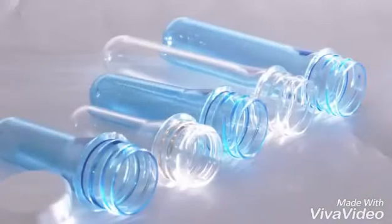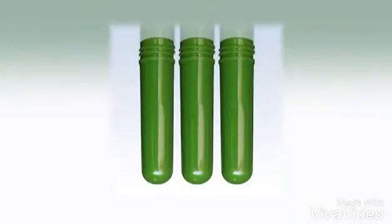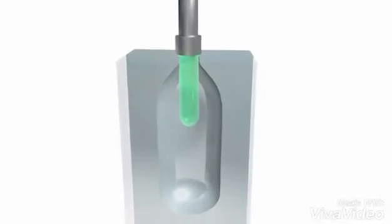For PET blow molding, bottles are first created in a test tube shape, injection molded preformed, and then, in a separate operation, reheated and blown into their final shape.